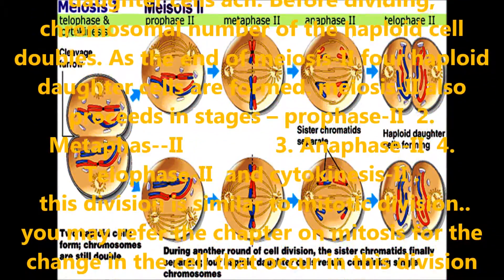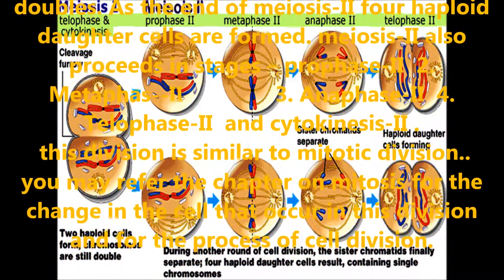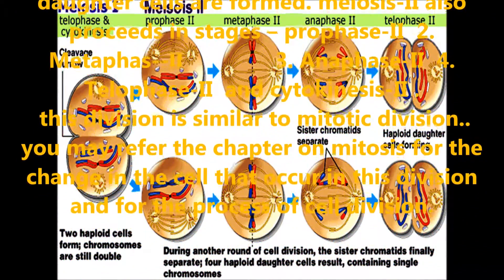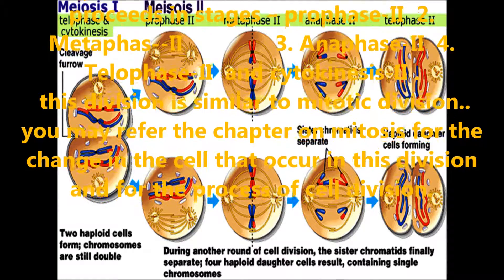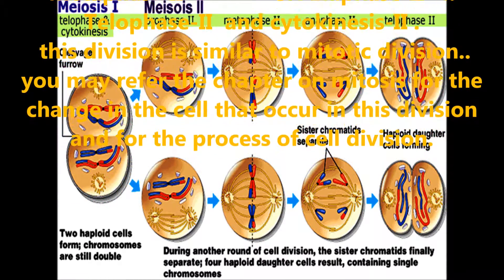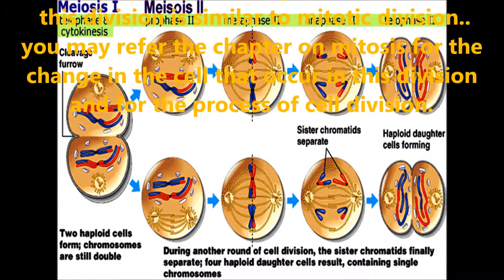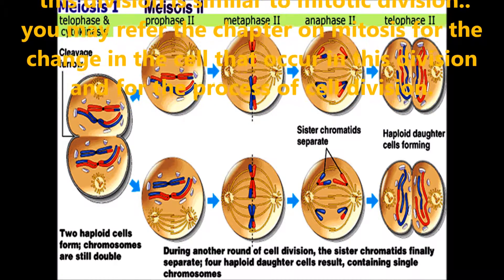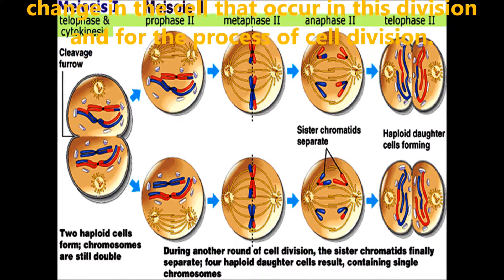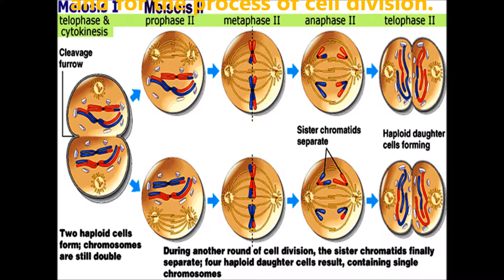Meiosis 2 also proceeds in stages of prophase, metaphase, anaphase, telophase, and cytokinesis. This division is similar to mitotic division. You may refer to the chapter on mitosis for the changes in the cell that occur during this division and the process of cell division.